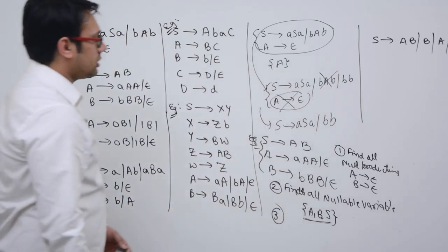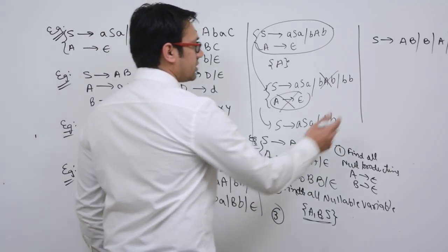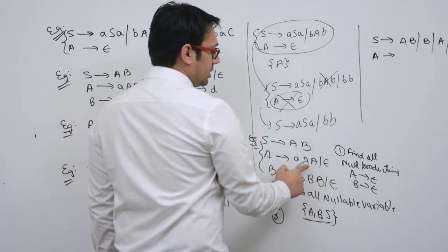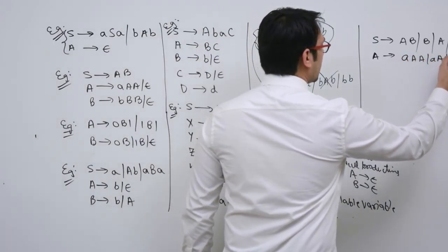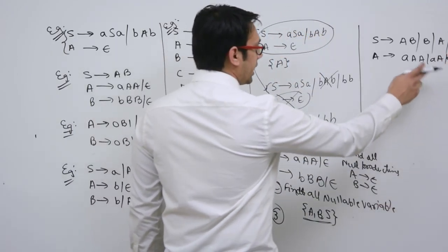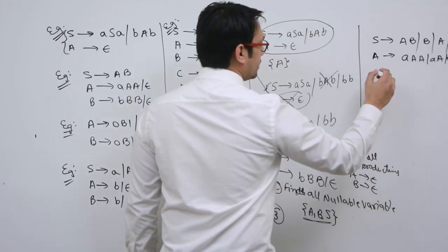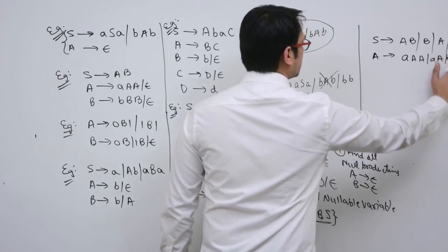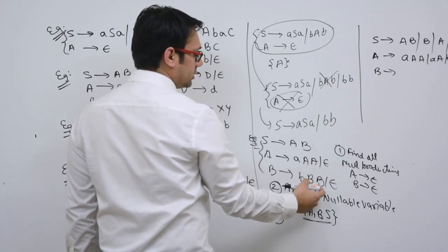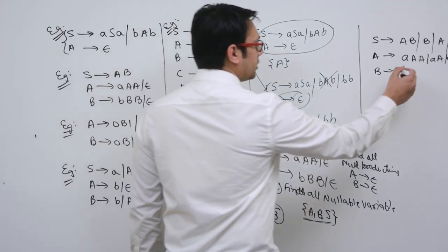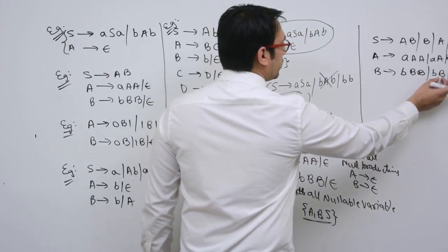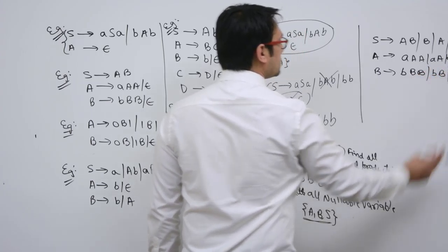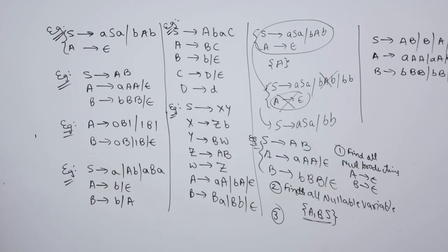For the production A derives A A A, write it with A and without A: A A A | A A | A. For B derives B B B, write it with B and without B: B B B | B B | B. Remove the epsilon productions — we don't need them anymore. The start symbol is generating epsilon, which is noted.